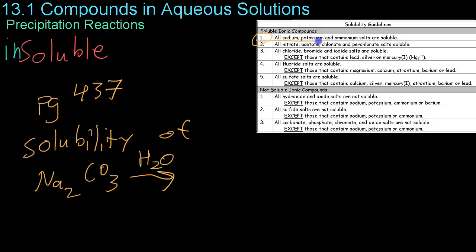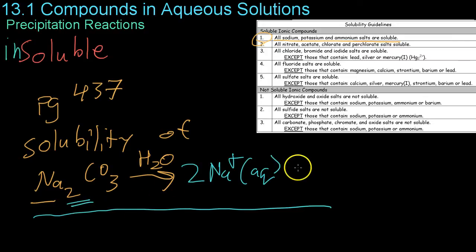So it says right here in rule number one that all sodium, potassium, and ammonium salts are soluble. So we're good. This has sodium in it, and because it is soluble, this means that we are allowed to write a dissociation reaction for it. So you start off with your sodium carbonate, which dissociates into two sodium ions in an aqueous solution, because there's two sodiums, plus a carbonate ion, which once again is in an aqueous solution.